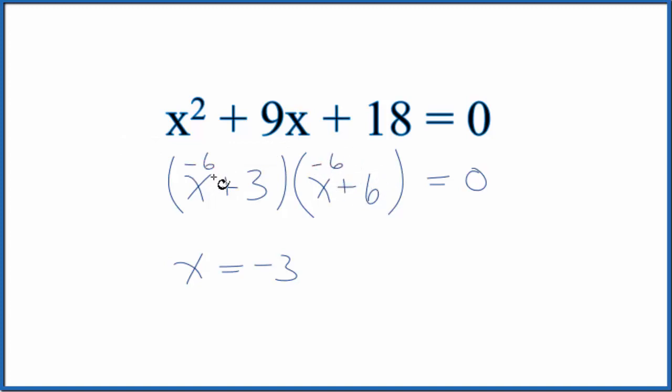Likewise, if x was -6, this would be 0, and here we'd have -3. So 0 times -3 gives us 0. So x = -6, that's the other one.